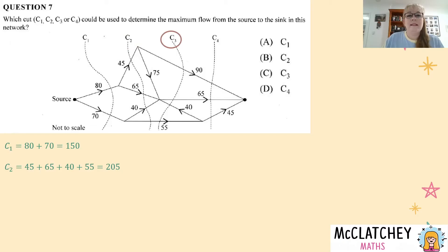Cut three is going through a few different pathways as well. We've got 90 plus 65. Now it does pass through the 40 but 40 goes backwards from the sink to the source so we don't count the 40, and the 55 is going forward as well. And then lastly we've got cut four. It's 90 plus 65 plus 45 equals 200.